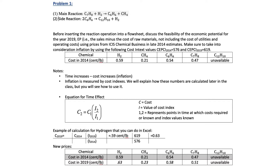We have 2014 price estimates for the chemicals. Biphenyl is not available, but we don't need it since we're only using the main reaction. We need to bring prices to the same year we're costing the project — in our case, 2019. As time progresses, these values can be updated using CEPCI values for 2020, 2021, or any year you're considering building a plant for.